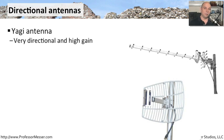Some very common types of directional antennas are listed here. This is a Yagi antenna. It is extremely directional, and these generally have very high gain associated with them. They can go over long distances, and you'll probably see these on a rooftop. If you ever need to send a wireless signal from one building to another, a Yagi antenna is very good for doing something exactly like that because it is so focused.